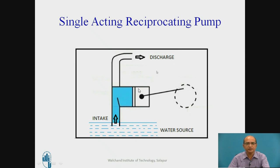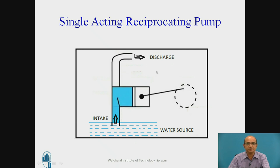In the double acting reciprocating pump, one more suction line is connected on the opposite side, and one more delivery line is also required. Whenever suction is going on one side, there will be discharge from the other side going to the tank, and vice versa. In this way, we can overcome the problem of intermittent supply by providing a double acting arrangement.